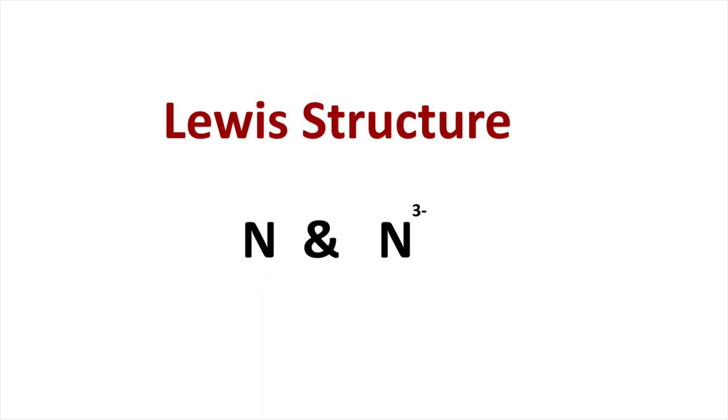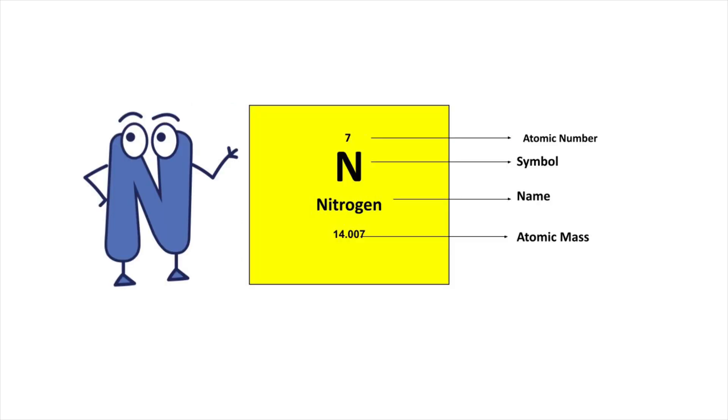Welcome to Aurora Chemistry for Everyone. Let us see how to write Lewis structure of nitrogen and its ion nitride ion. To write Lewis structure, we should know that nitrogen's atomic number is 7.